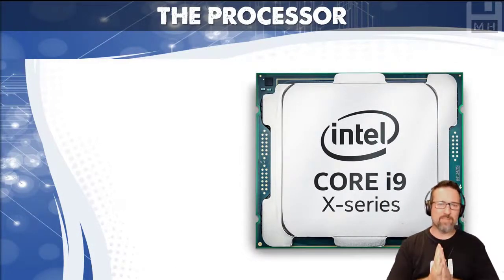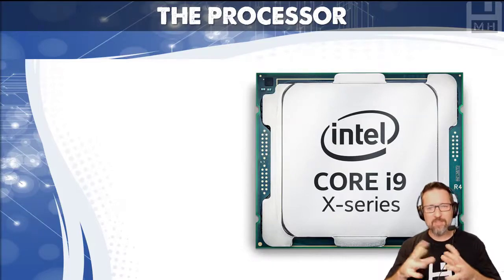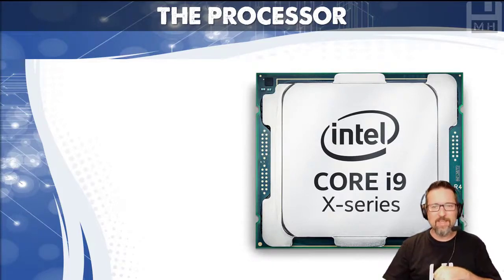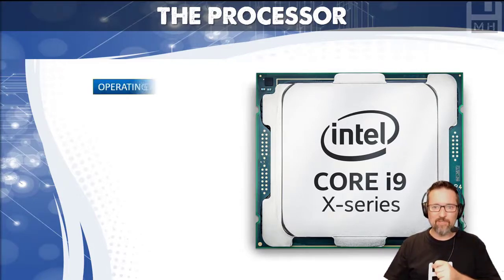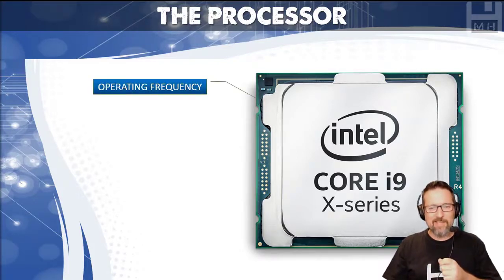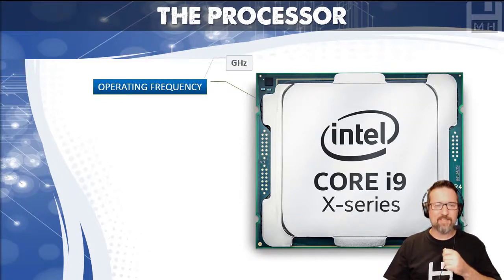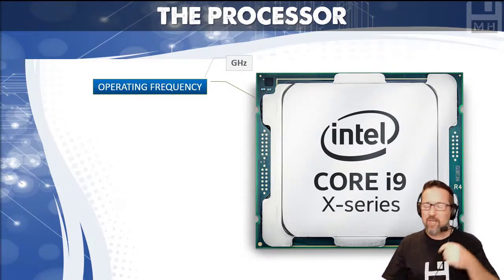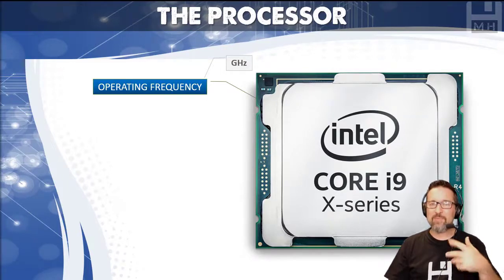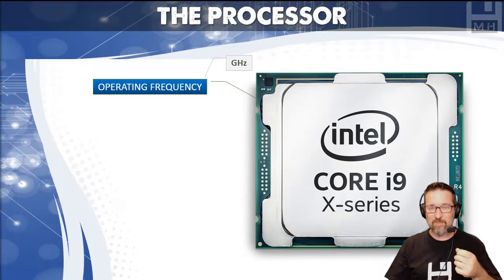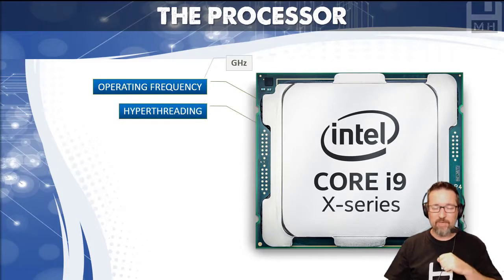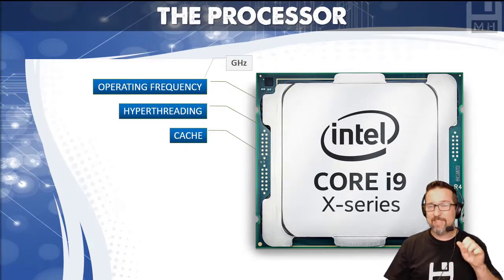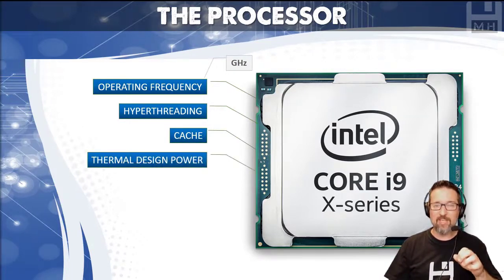When we are looking at a processor, there are various specifications that relate to it. As computer applications technology students, here are some things we're going to look for. The first is the operating frequency of the processor, measured in gigahertz — that is the number of cycles per second, how many calculations it can perform in one second. There's also a specification called hyper-threading, and another called cache.